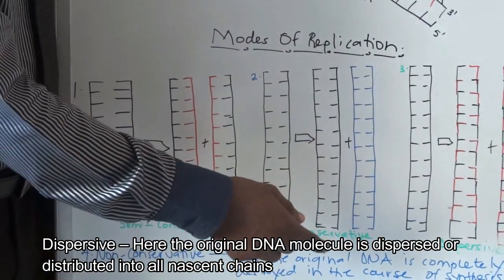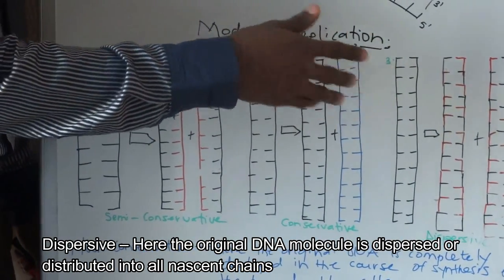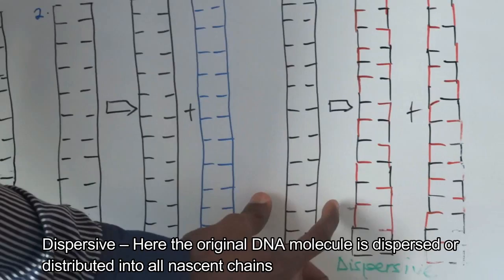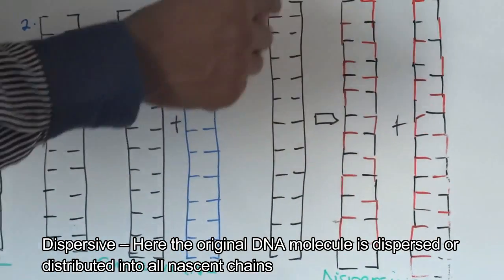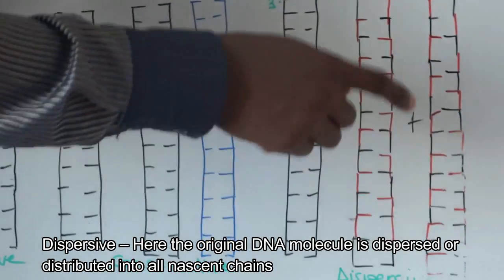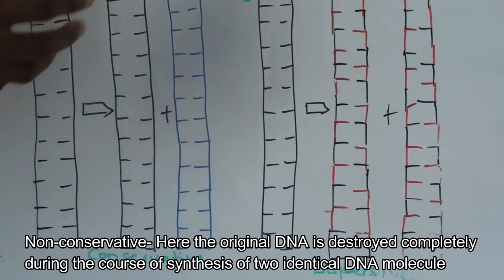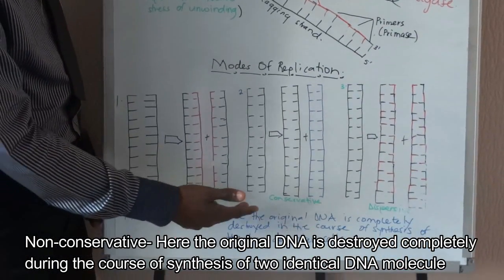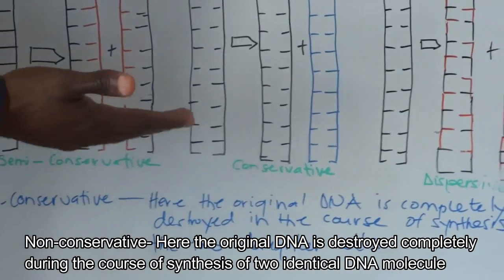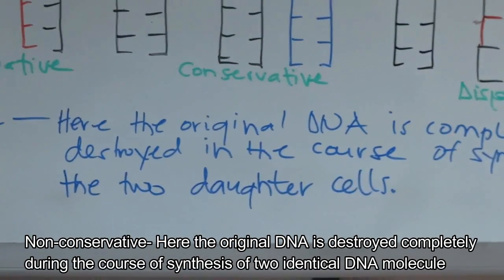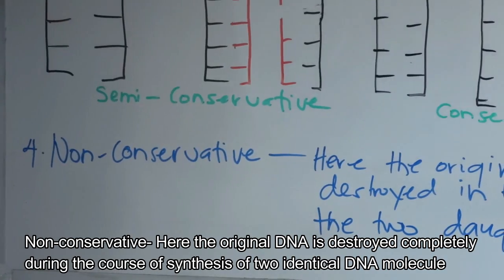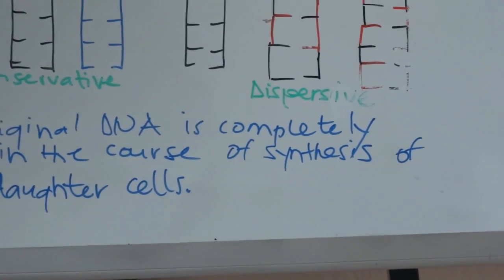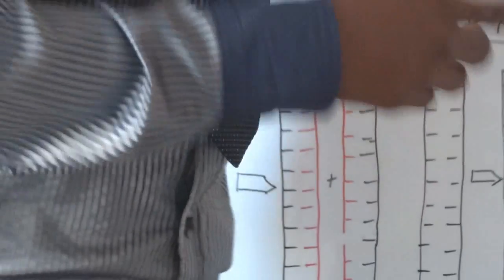We also have the dispersive form, where the daughter cell DNA is scattered — portions of parental and new original DNA are mixed throughout both daughter cells. Finally, we have the non-conservative mode, where the original DNA is completely destroyed during synthesis of the two daughter cells, so the two strands produced are completely new. This brings us to the end of DNA replication.